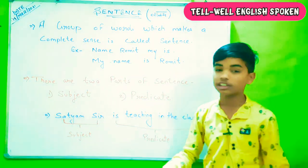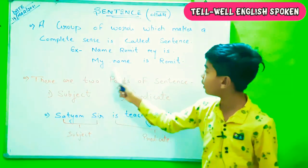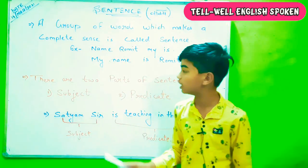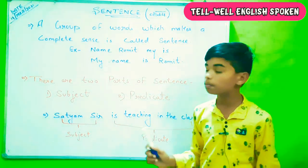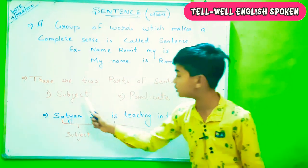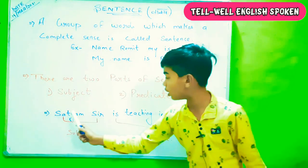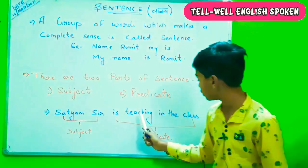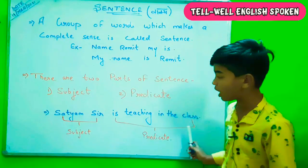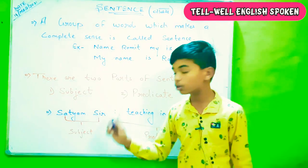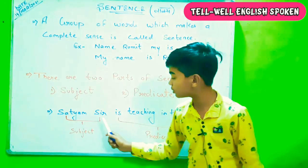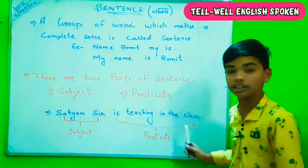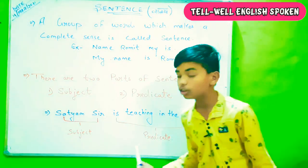This is not a sentence. 'My name is Romit.' This is a sentence. There are two parts of a sentence: subject and predicate. For example, 'Satyam sir is teaching in the class.' So 'Satyam sir' is the subject, and 'is teaching in the class' is the predicate.